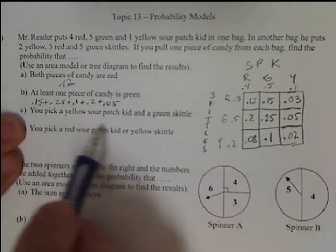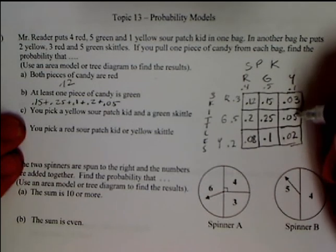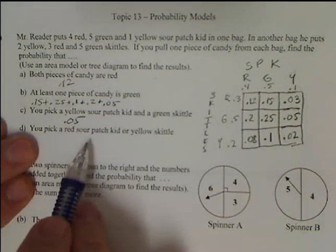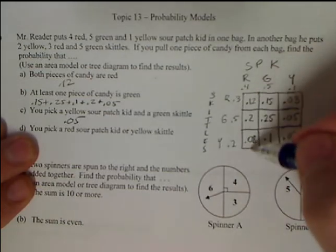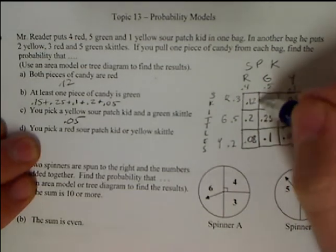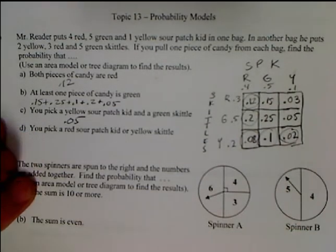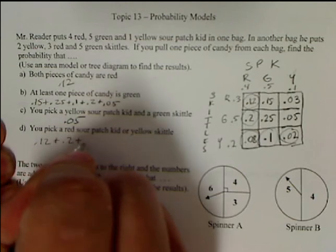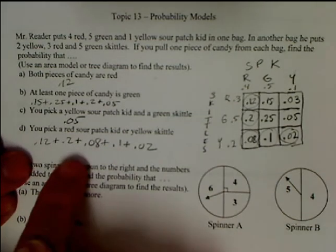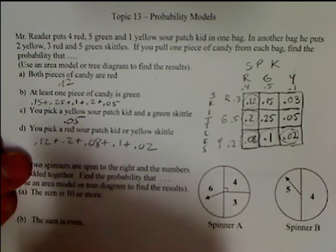We want to pick a yellow Sour Patch and a green Skittle — that's very specific. Yellow Sour Patch is in this column, green Skittle — there's only one of those, that's 0.05. For a red Sour Patch Kid or a yellow Skittle, that means anything in the red column or the yellow Skittle row. Adding those up: 0.12 plus 0.2 plus 0.08 plus 0.1 plus 0.02 — that gives us 0.52.